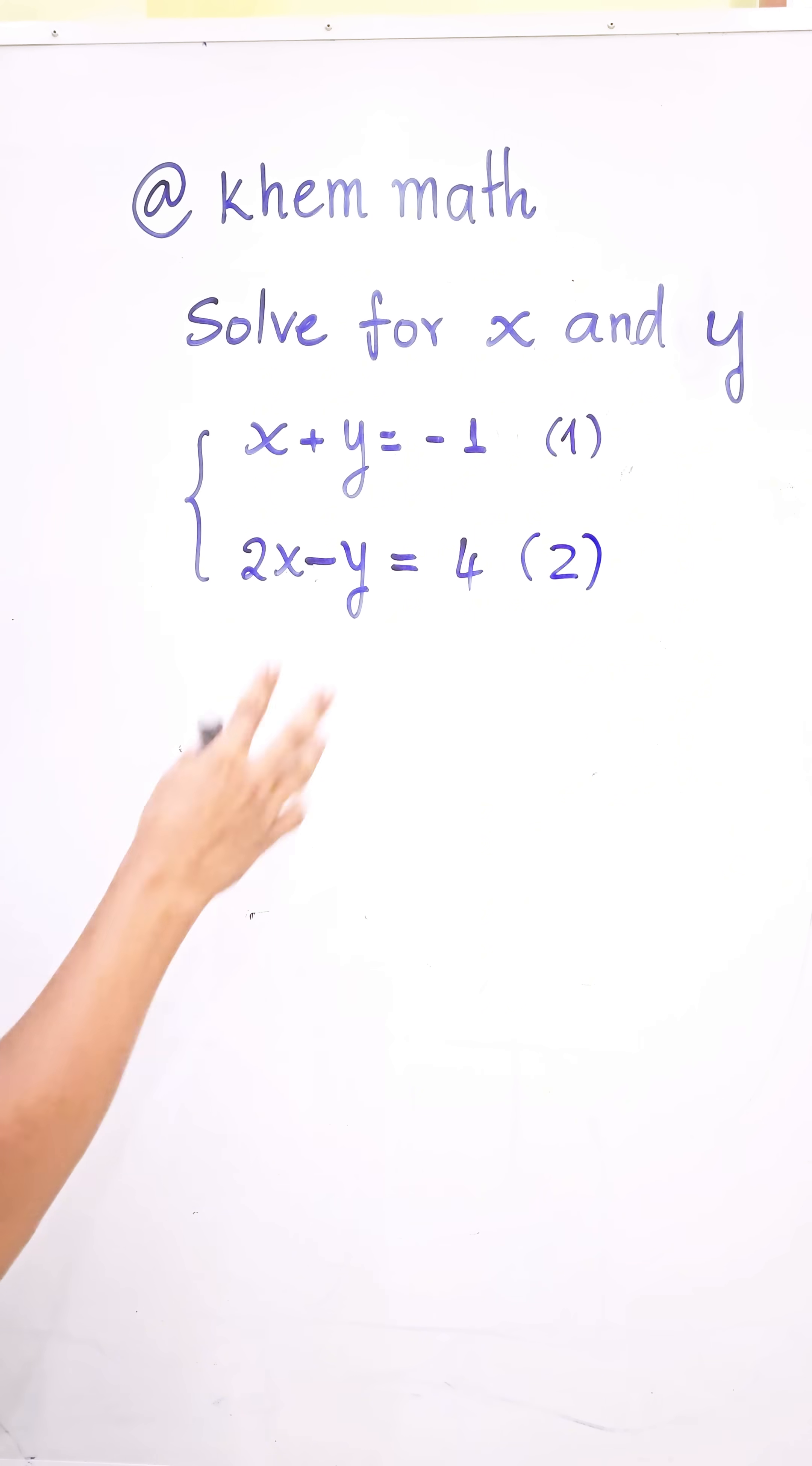To find the value of x and y, the first step is adding both equations together. x plus 2x gives us 3x, and y minus y equals 0. Negative 1 plus 4 equals 3. We divide both sides by 3, so x = 1.